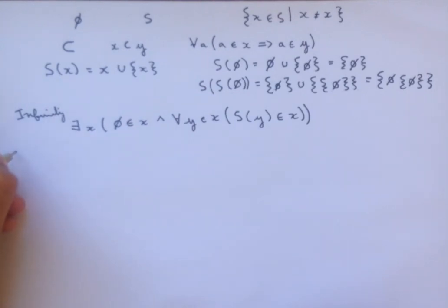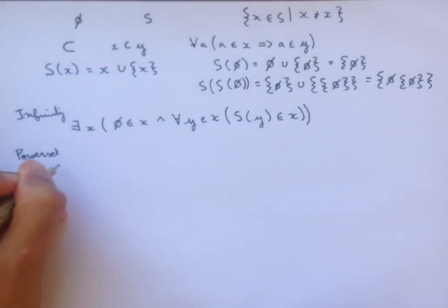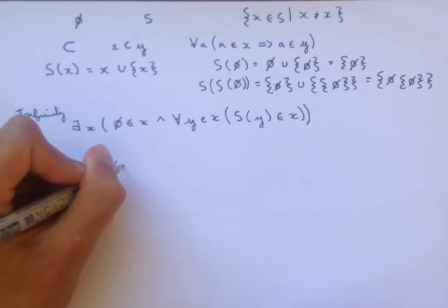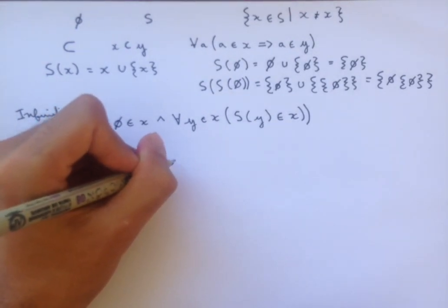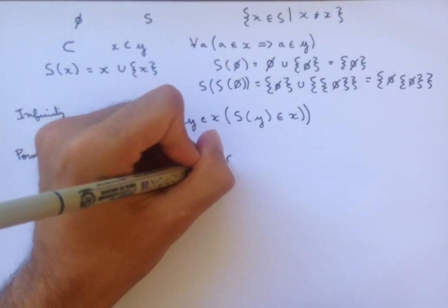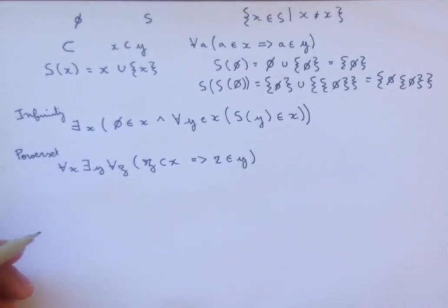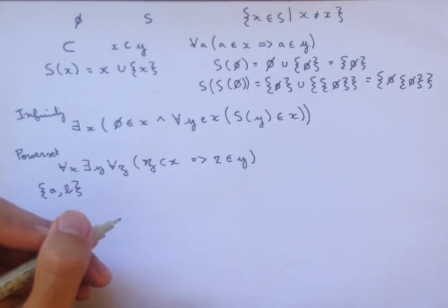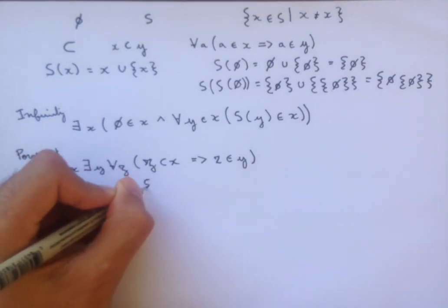The next axiom is the power set axiom, which says that for all X, there exists Y such that for all Z, Z is a subset of X implies Z is an element of Y. So, this is giving us the set of all subsets of a set. Given a set containing the elements A and B, the power set, or the set that's guaranteed to exist by this axiom, well, what's it going to have in it?